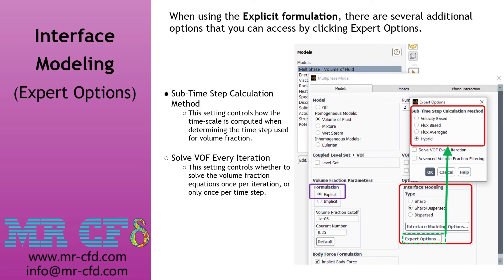When using the explicit formulation, additional options can be accessed by clicking the expert options button. The first option is the sub-timestep calculation method, which controls how the time scale is computed when determining the time step used for volume fraction. For most cases, the hybrid option is used and it is a good idea to keep the default selected. The second option is 'solve VOF every iteration,' which controls whether to solve the volume fraction equations once per iteration or only once per time step.